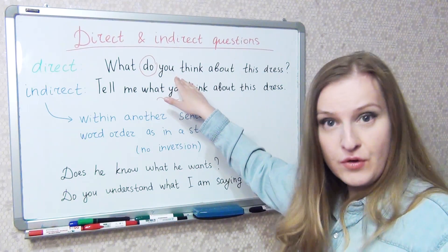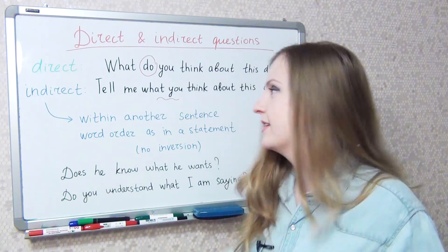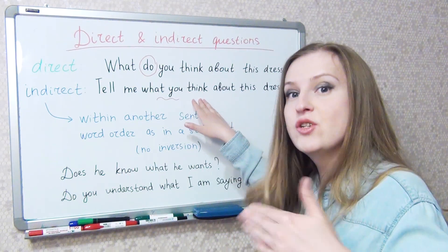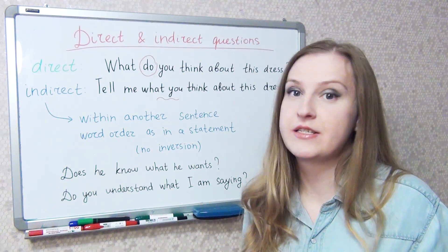In the first question we have inversion as we usually do in questions. And in the second indirect question there's no inversion, the word order is as in a statement.